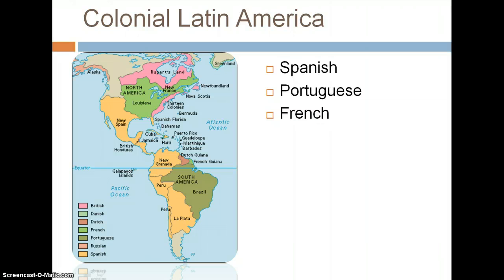And finally, we have the French, who are also in this area. You can see a small dot of lighter green where it says French Guinea, and then we also have Haiti, which we've talked about the past couple of days when discussing the revolution going on there.